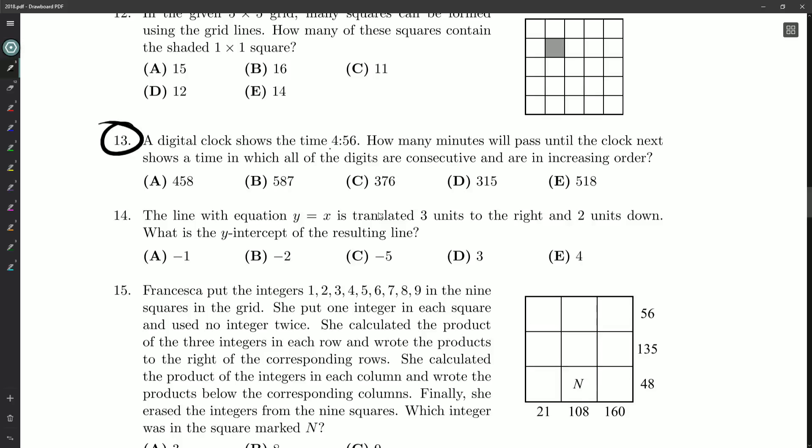All right, so a digital clock shows the time 4:56. How many minutes will pass until the clock next shows a time in which all of the digits are consecutive and are in increasing order?